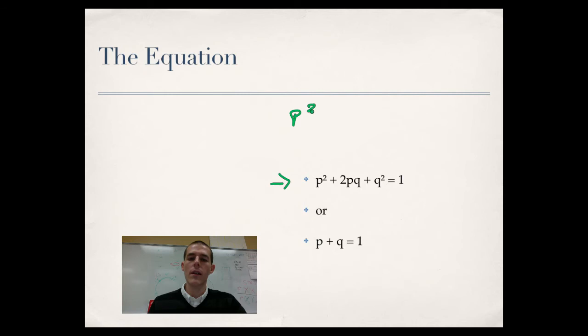P squared is equal to a homozygous dominant individual. 2PQ, that is your heterozygous, so this would be equal to Aa, and Q squared is equal to homozygous recessive. So this equation right here is essentially giving you a starting point to assess your organisms and see what you got in the population.